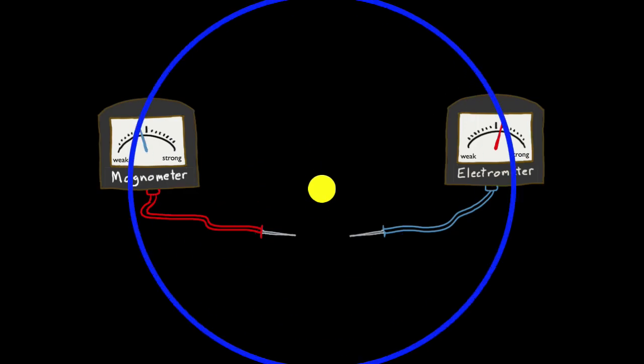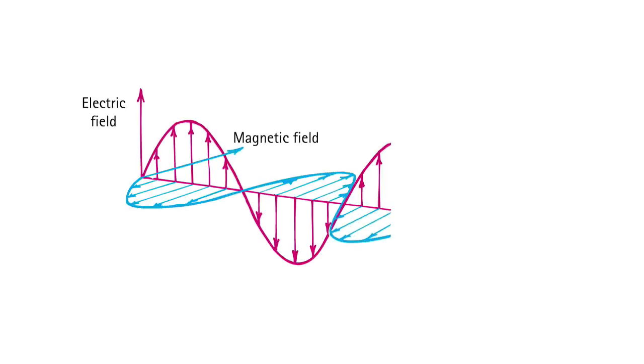If the frequency of those waves is some four to seven times ten to the fourteenth hertz, the wave can tickle the back of your eye, which detects those waves of energy as what we call light.